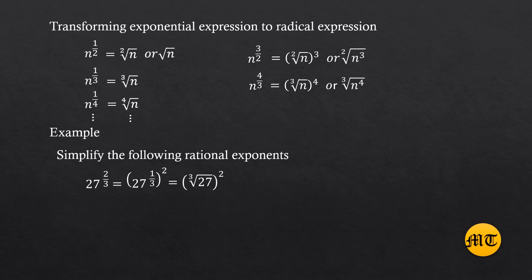The cube root of twenty-seven is equal to three, since three times three times three equals twenty-seven. Therefore, it becomes three raised to two. Three squared equals nine — three times three is nine. Therefore, nine is the answer.